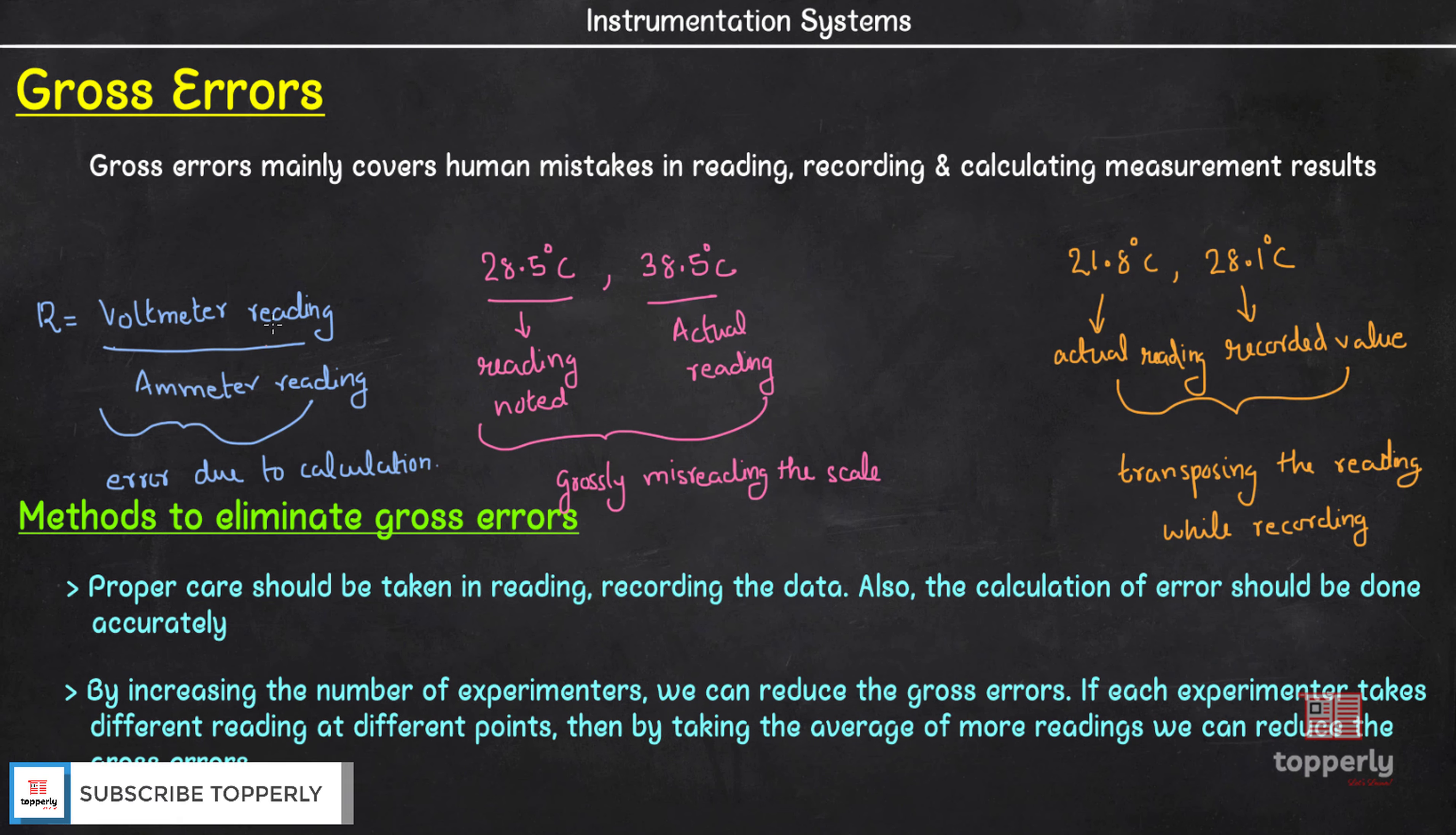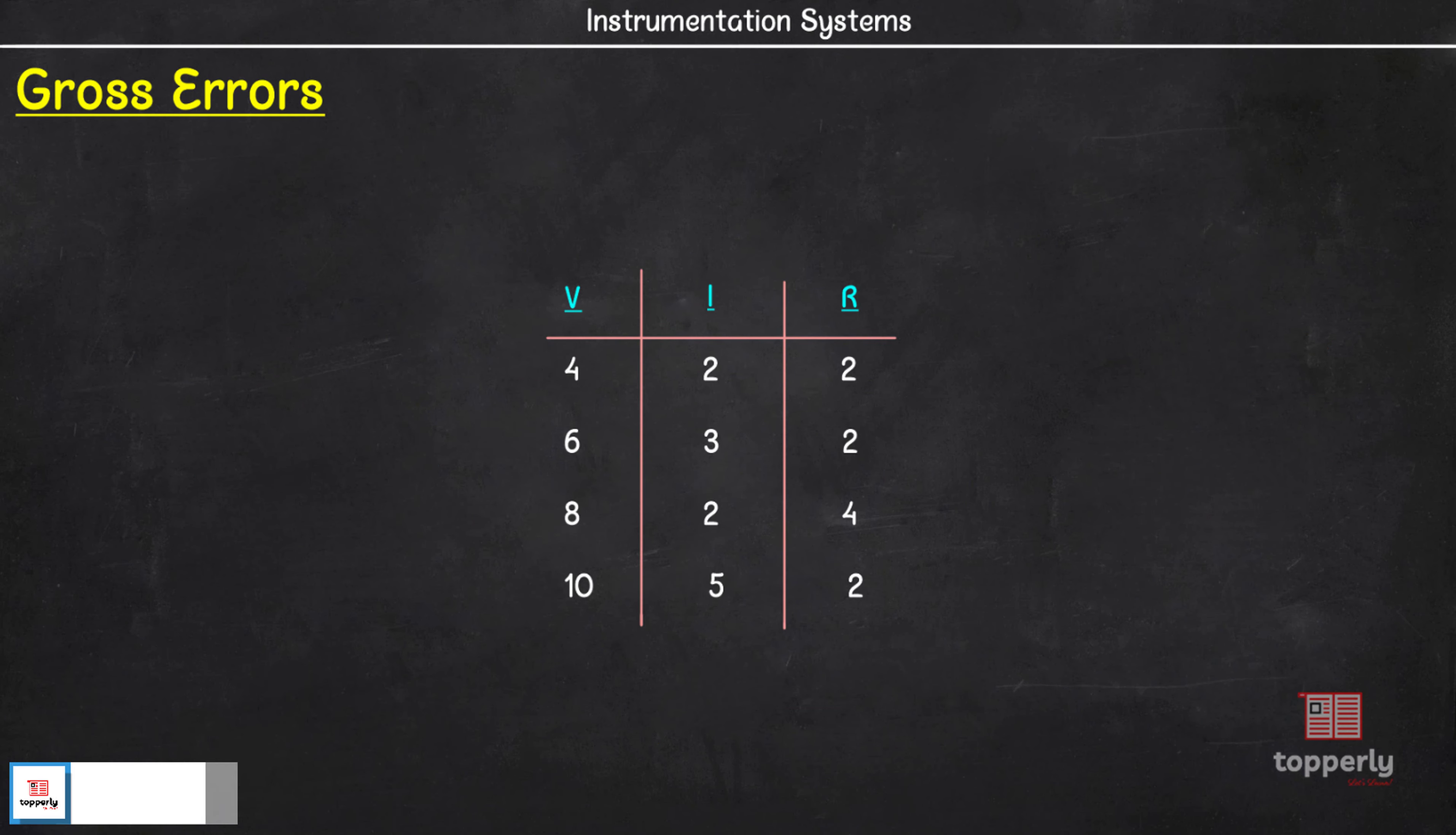For example, consider the same case of measuring resistance. Here we take multiple readings at different reading points to ensure that no gross error is committed. For instance, consider this set of readings. Here V represents voltmeter readings, I represents ammeter readings. Also you can see that here the majority of readings agree with the value of 2 ohm except in this case. So we can infer that a gross error is committed here. If we had taken only one reading and let's say that reading was this case, then we would have falsely obtained the resistance as 4 ohm which is a serious error. Thus you can see how multiple readings can eliminate gross error.